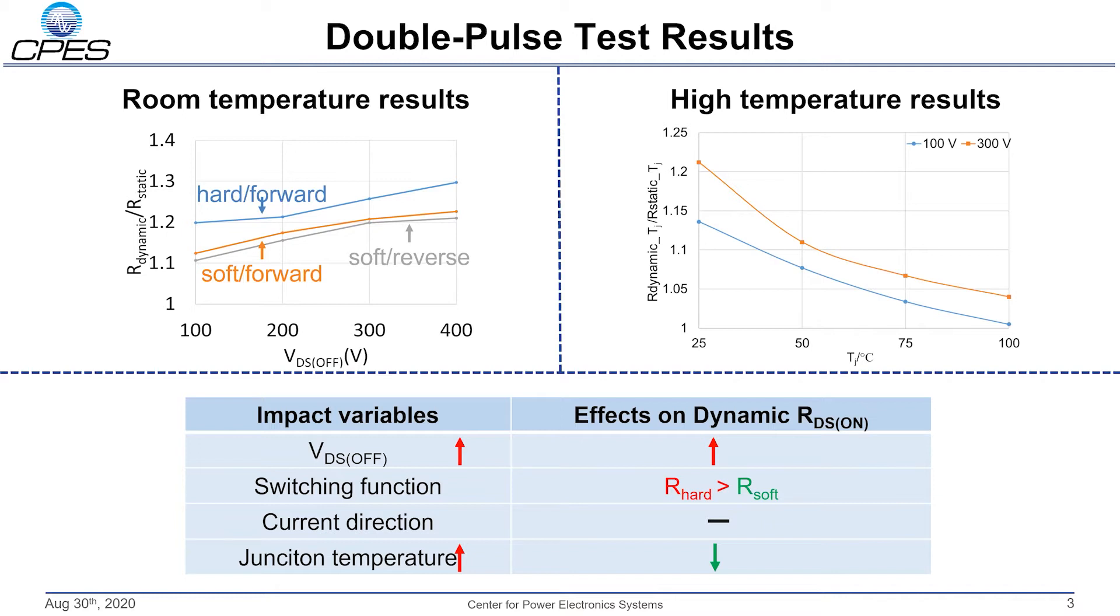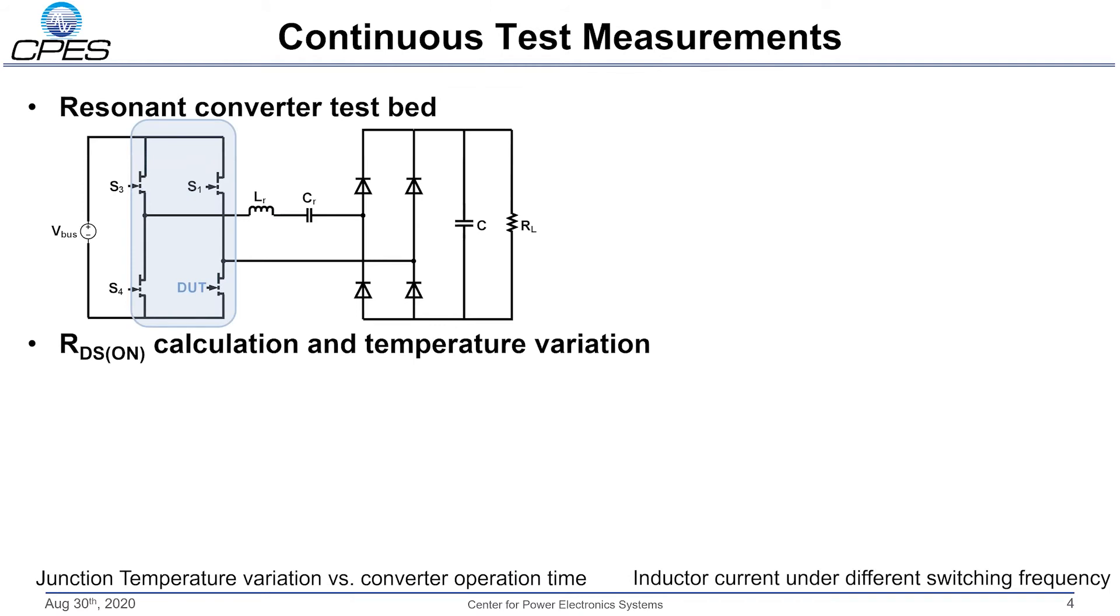Compared to soft turn-on, switching events after a hard turn-on commutation also lead to a larger ratio. The figure on the right shows the dynamic-to-static RDS(ON) ratio at the same junction temperature for two different DC bus voltages, which indicates that the higher the junction temperature is, the lower will be the effect on the RDS(ON) value. This work mainly focuses on soft switching operation, given that it is the preferred operating mode for these switches.